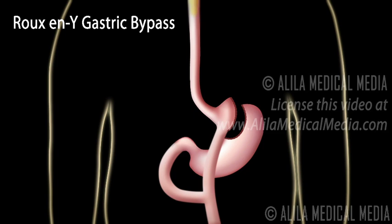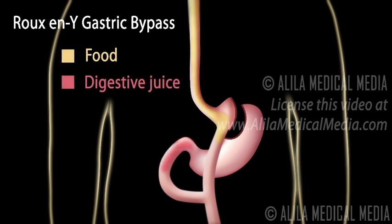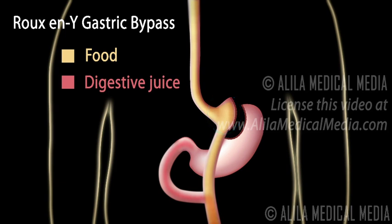How is weight loss achieved? Firstly, the volume of the stomach is now greatly reduced to a small pouch, usually less than 10% of the original volume, which is filled up fast after a small amount of food intake. This sends a signal to the brain that the stomach is full and generates a feeling of fullness or satiety, helping to reduce the amount of food intake.